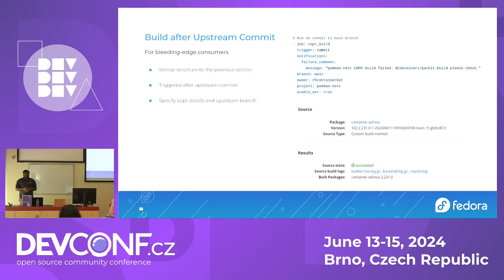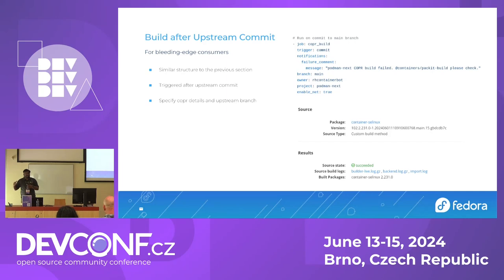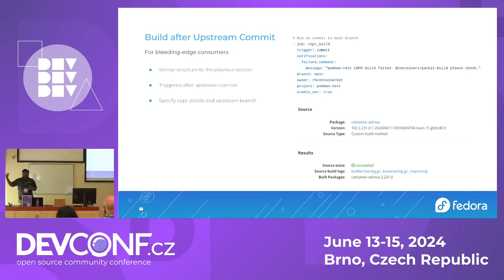But if you want a build that persists in Copr — for people who want the latest Podman right when there is a commit upstream — you use a different trigger called commit and specify which branch to track. Whenever Packit sees a commit on that branch, it generates a Copr build that stays there. You don't need to specify targets; it will build against whatever the Copr repo has configured.